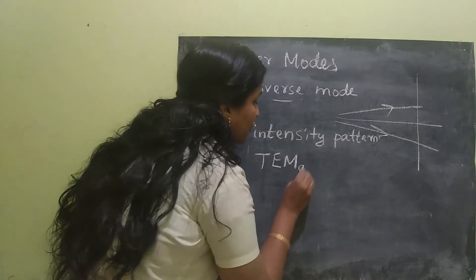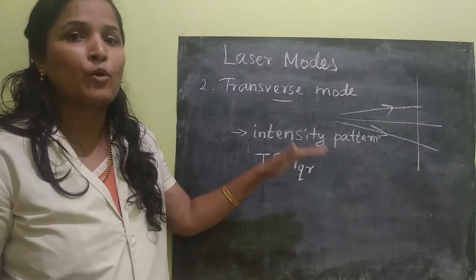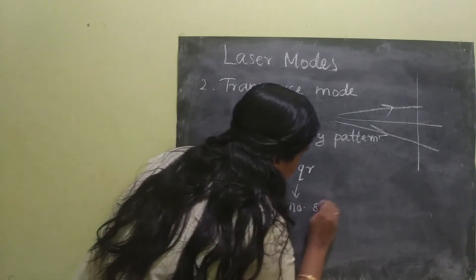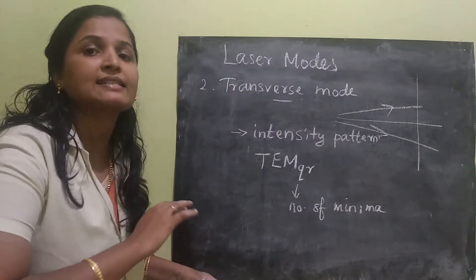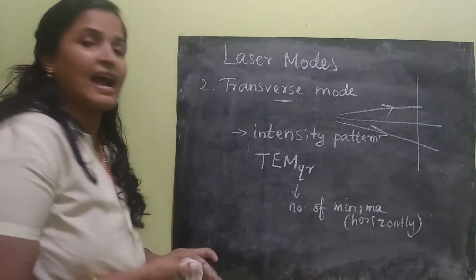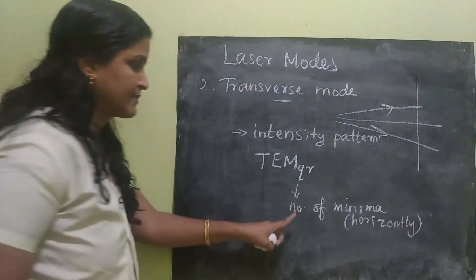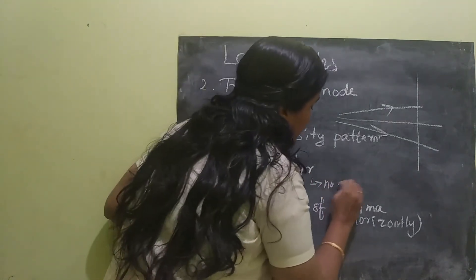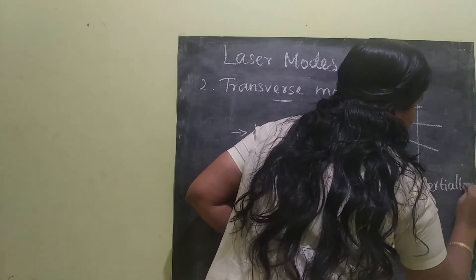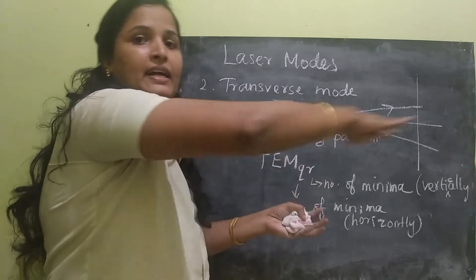TEM will have a suffix of Q and R. Q means the number of minima as the beam is scanned horizontally. Just imagine I am scanning the beam in a horizontal way and counting the number of cuts. R is the number of minima when it is scanned vertically — as I scan from top to bottom or bottom to top, how many cuts in that direction. That is the concept of Q and R.